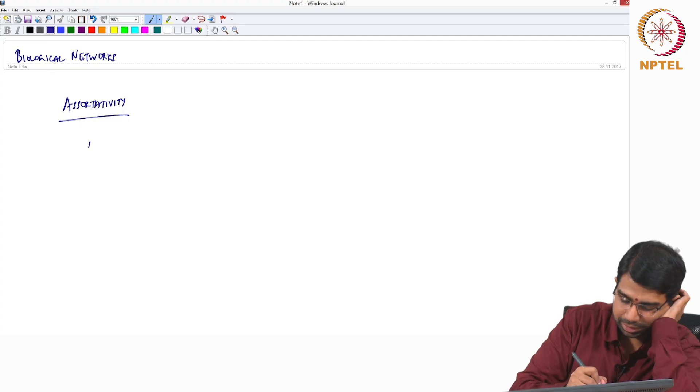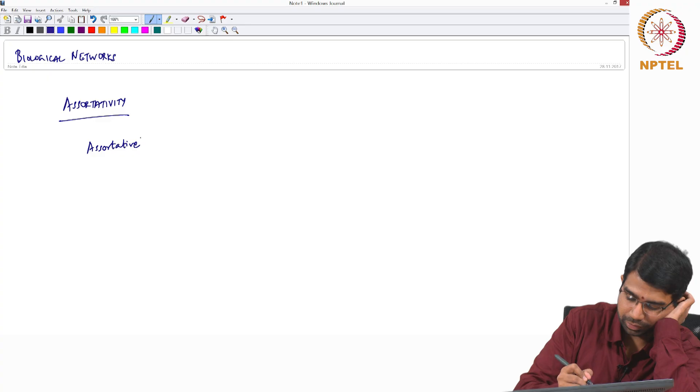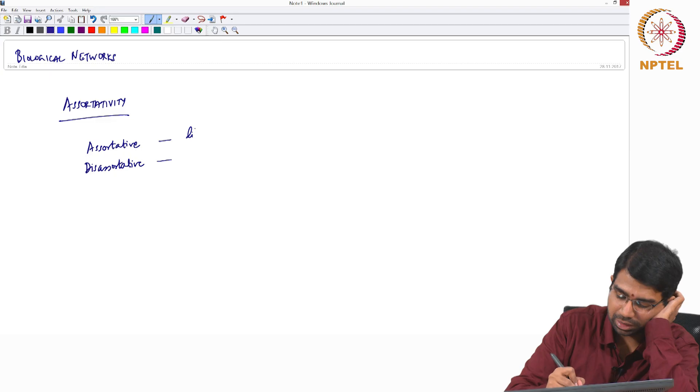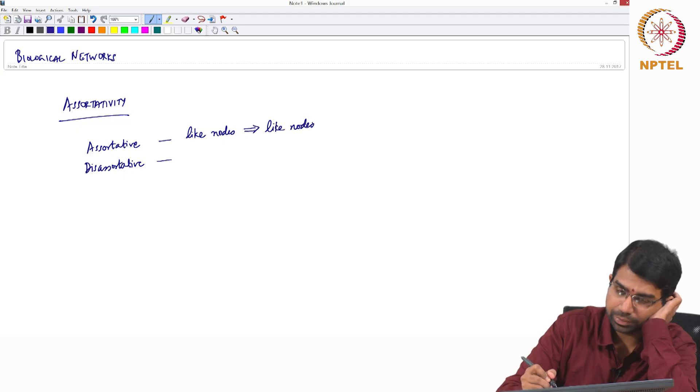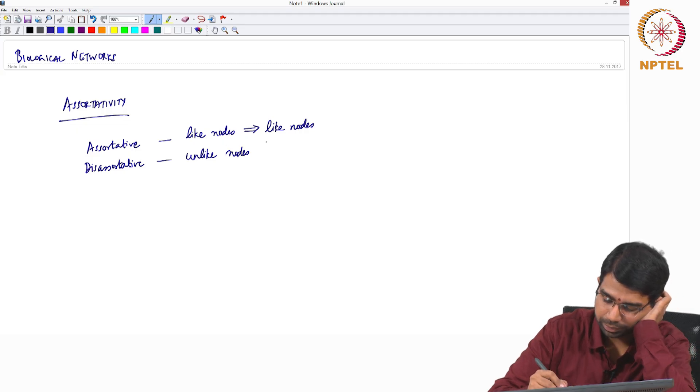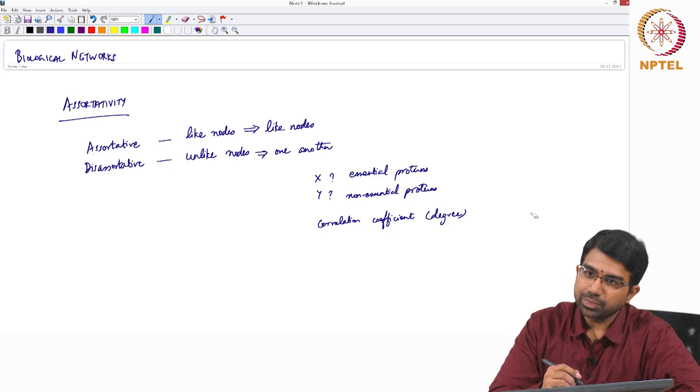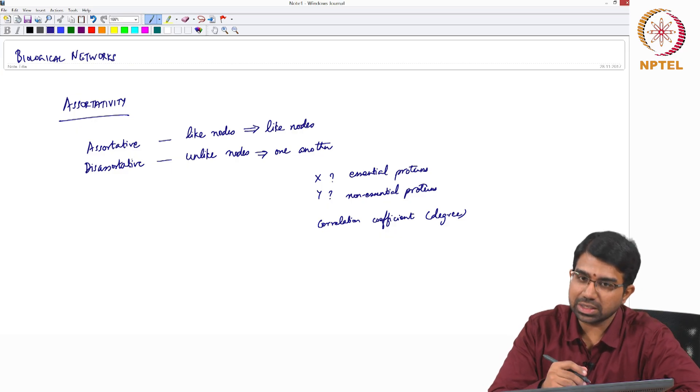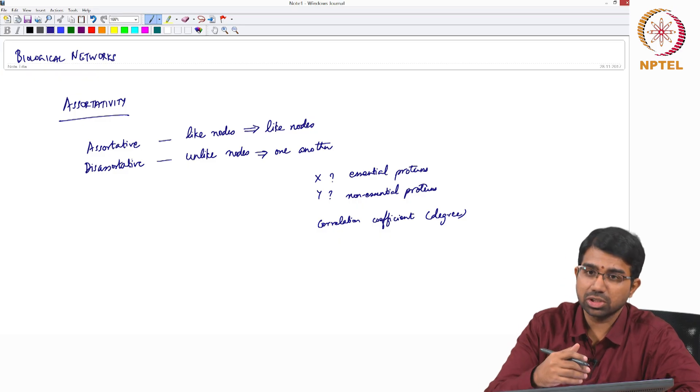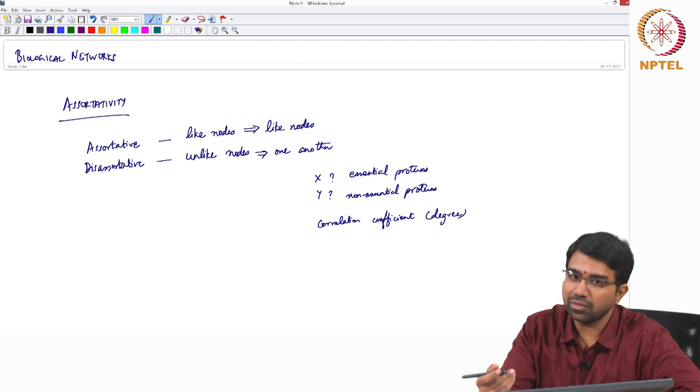Networks can be assortative or disassortative. Assortative is like nodes connect to like nodes. Disassortative is unlike nodes connect to one another. So what is assortativity? When like nodes connect to like nodes, we say that the graph is assortative. When nodes of different types connect to one another, you can call the graph disassortative.